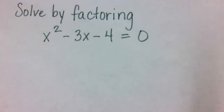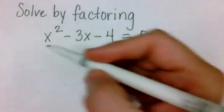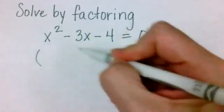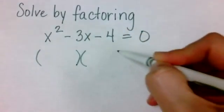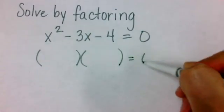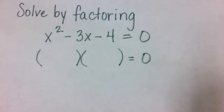For this problem, we'll solve the equation by factoring x² - 3x - 4 = 0. We're looking for two parentheses that when we multiply them together, we get x² - 3x - 4. Let's do this in two parts.